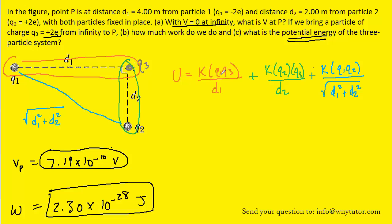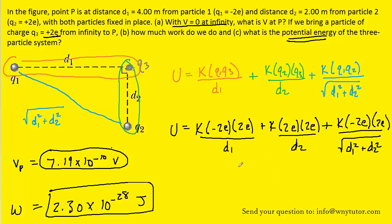We can then go ahead and plug in the values of the charges Q1, Q2, and Q3, which were stated in the question. And then if we look carefully, we can see we have some common factors. Every term has a K, and then every term also has an E squared because we have E times E in the numerators. So we're going to actually factor out for simplicity a factor of KE squared. And that's going to leave us with negative 4 over d1, plus 4 over d2. And then we're going to have a minus 4 over the square root of d1 squared plus d2 squared.